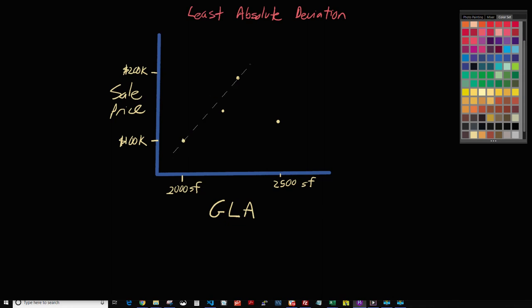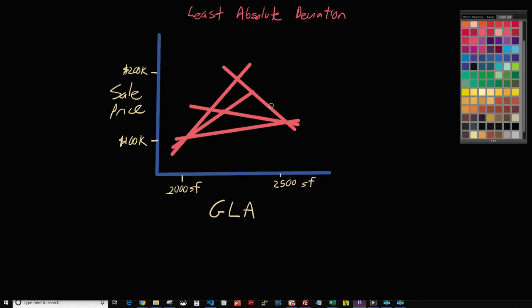So just as an example, we draw a line through one set of points, and then we do the same thing with the next set of points, and the next set, until every single pair of points had a line drawn through it. Then we would calculate the slope of every single one of those lines, and then we would get the median of all of those.